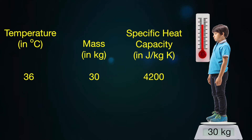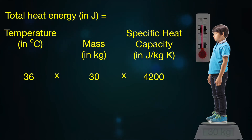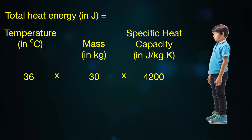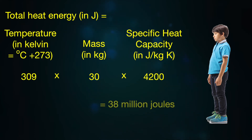It's a really simple calculation: heat energy is equal to mass times temperature times specific heat capacity. And for the calculation to work, you have to convert degrees Celsius to Kelvin by adding 273.